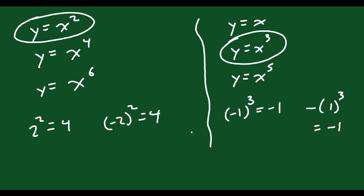Those are examples of even and odd functions. At this point you should notice the pattern: you can identify odd versus even based on the exponents. x squared, x to the 4th, x to the 6th all count as even functions — even exponents. Whereas y equals x (that's exponent 1), x cubed, x to the 5th — those all qualify as odd functions — odd exponents.